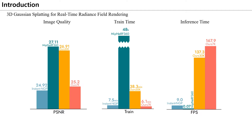Gaussian Splatting shows similar performance on each side and significantly improved inference time. If you think of releasing a service about NeRF, MipNeRF 360 has good quality, but the train speed takes too long. Recently, Google published a follow-up paper at ICCV 2023 called ZipNeRF, which has good quality and fast train speed.